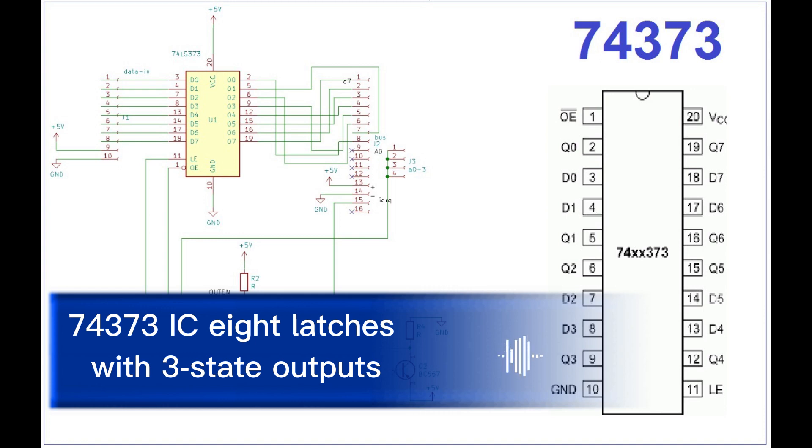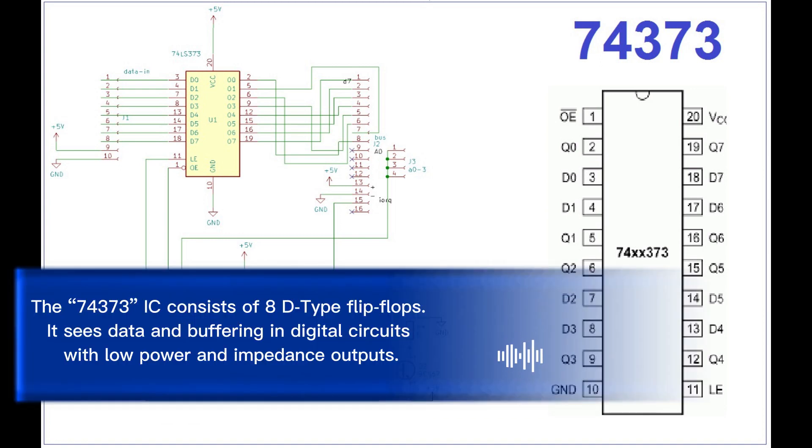The 74373 IC consists of 8 D-type flip-flops. It handles data and buffering in digital circuits with low power and impedance outputs.